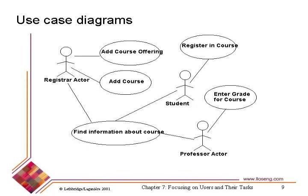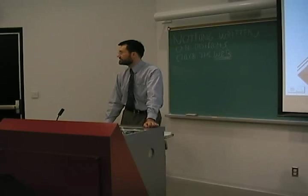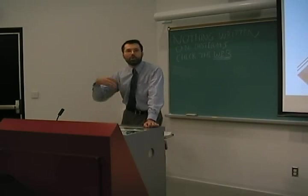First, a use case diagram — this is a formal part of the UML set of diagrams, part of the UML repertoire. It has two main symbols: the actor, represented by a stick person, and the use case, represented by an ellipse with the name of the use case in it. In this case, the registrar can add course offerings, add courses, and find information about a course. The student can register in a course or find information about it, and the professor can enter a grade and find information about a course.